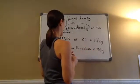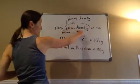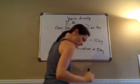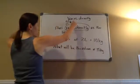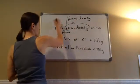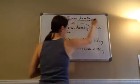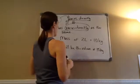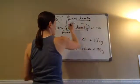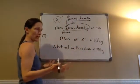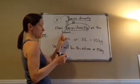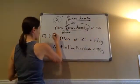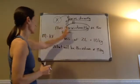We're going to learn something inverse in a minute. So, the mass varies directly as the volume. Varies directly means they're going to go in the same direction, whether up or down. When you're doing varies directly, you're always going to multiply. We're going to use M for mass. M equals K times V. They always use the letter K for the variation constant, and V is for volume.